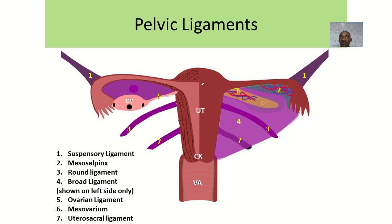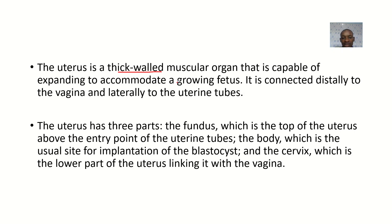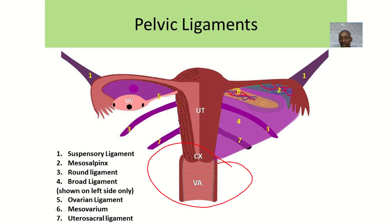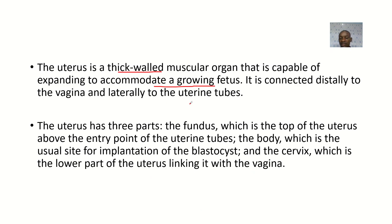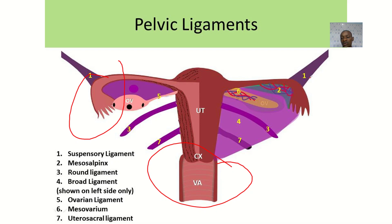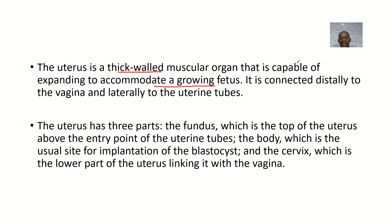The uterus has the endometrium where the fertilized zygote, after dividing into the blastocyst, will implant. It can expand as the fetus grows. The uterus is connected distally to the vagina, and laterally on both sides it is connected to the uterine tubes — one on the right and one on the left.